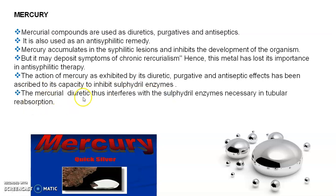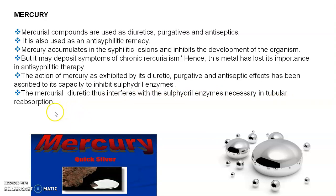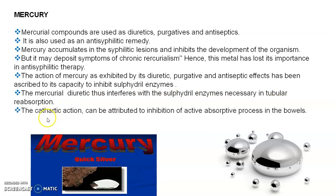Mercurial diuretics interfere with sulfhydryl enzymes. All three heavy metals — lead, arsenic, and mercury — inhibit the sulfhydryl enzymes necessary for tubular reabsorption. The cathartic action can be attributed to the inhibition of the active absorption process in the bowels.